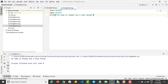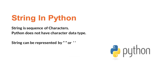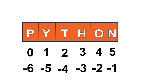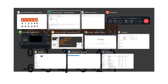Now let's cover indexing and slicing. Every character in a string has an index starting at zero. For the string 'Python': P=0, y=1, t=2, h=3, o=4, n=5. Python also supports negative indexing: N is -1, O is -2, continuing backwards to the start. Understanding this is key to indexing and slicing.